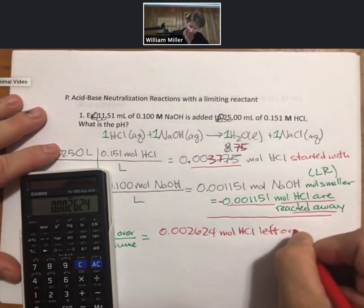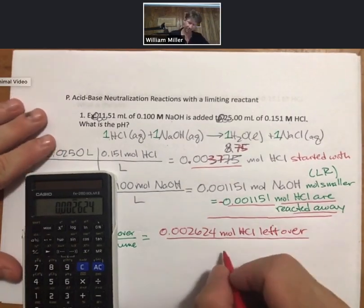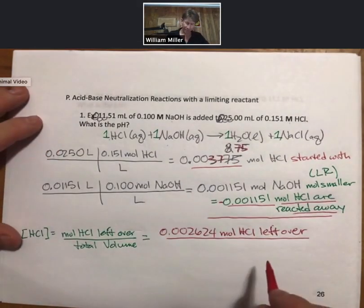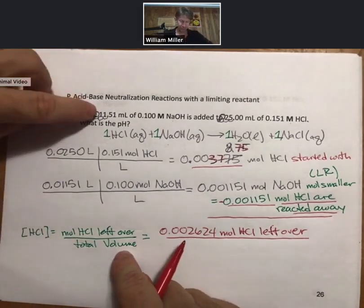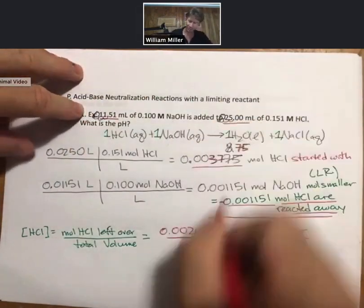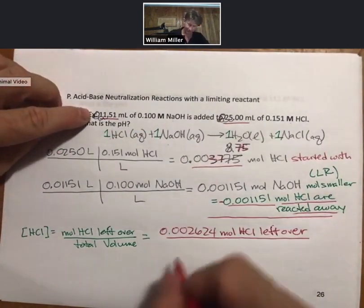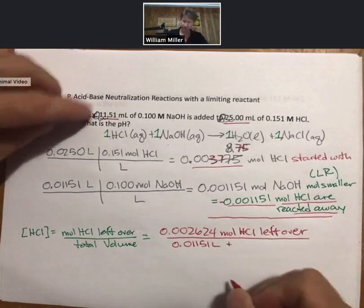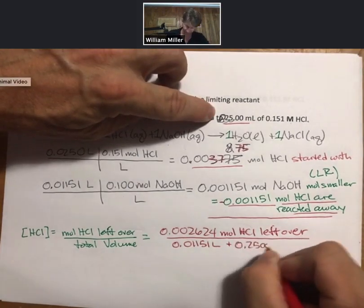I don't have to write left over but since this is the example and these are your notes let's be super careful. Now I need my total volume. My total volume in this case is going to be my volume of sodium hydroxide plus my volume of hydrochloric acid. So it's going to be, and I'll just keep it in liters, 0.01151 liters plus 0.02500 liters.